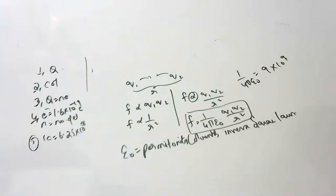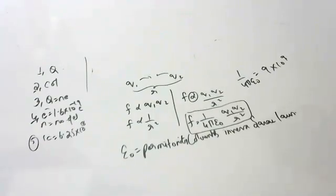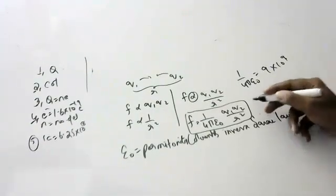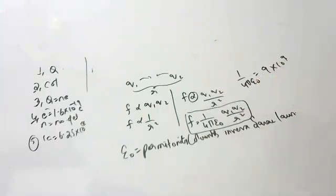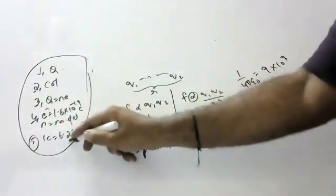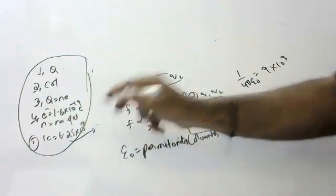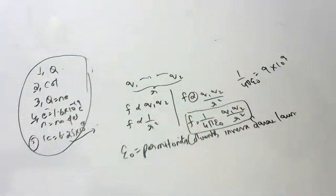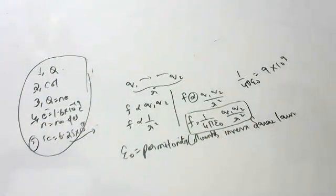That covers the topic of charge. Remember: charge is denoted by Q, units are Coulombs, formula is Q equals NE, and the derivation showing one Coulomb equals 6.25 into 10 to the power of 18 electrons is very important. Thank you so much.